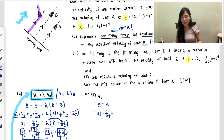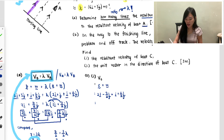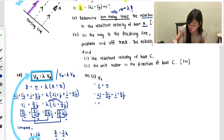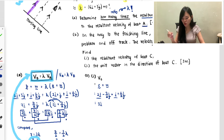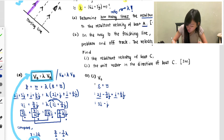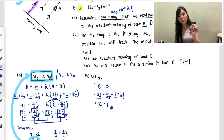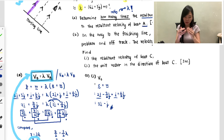Boat C's speed is 2i − 3/2 j, plus the water current i + ½j. Combining: 2i + 1i = 3i, and −3/2 + 1/2 = −1j. So the resultant velocity for boat C is 3i − j.